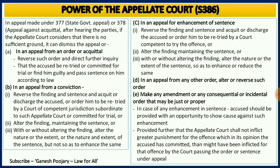Section 386 discusses about the power of the Appellate Court. Now the appeal has been made — what are the powers of the Appellate Court? If the appeal is made either under section 377 or 378, which discuss about the appeal by the state government or appeal against acquittal, and while hearing both parties if the Appellate Court feels that there is no sufficient ground, it can directly dismiss such appeal. That is the first possibility.